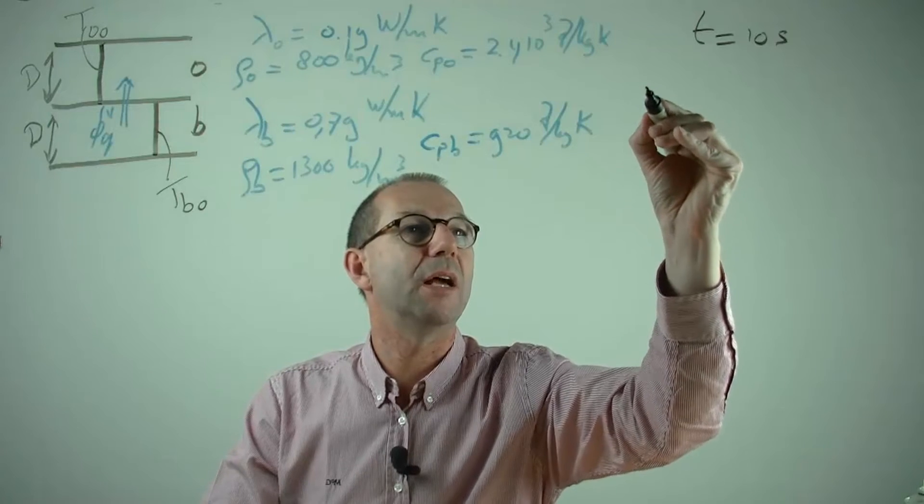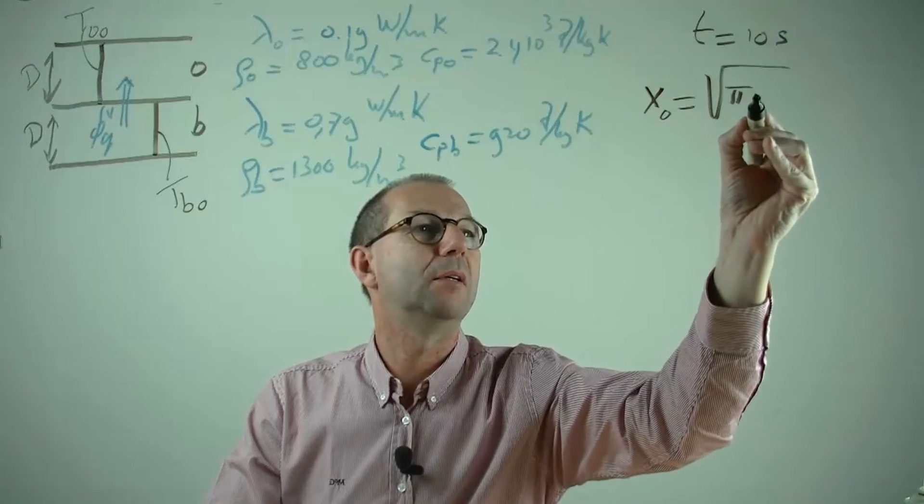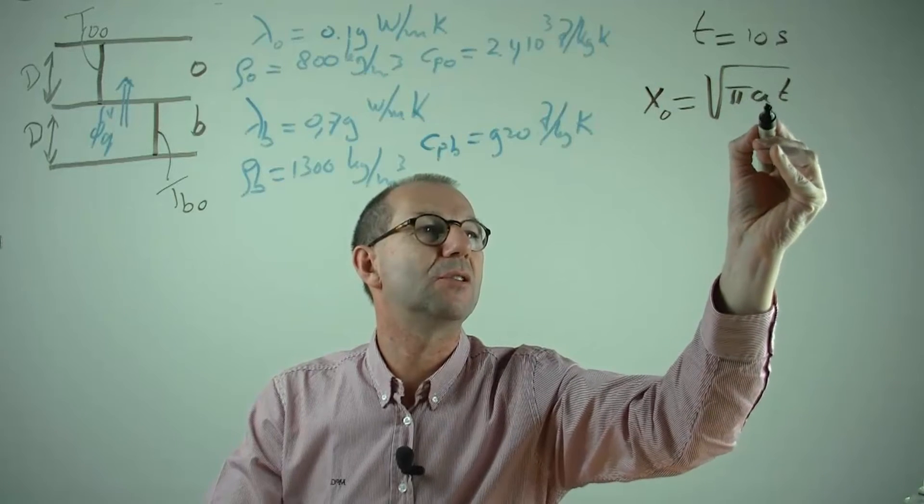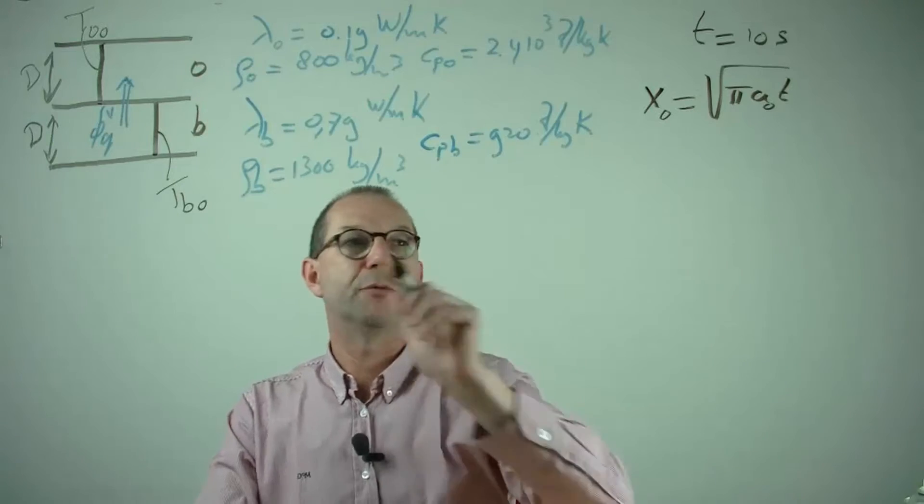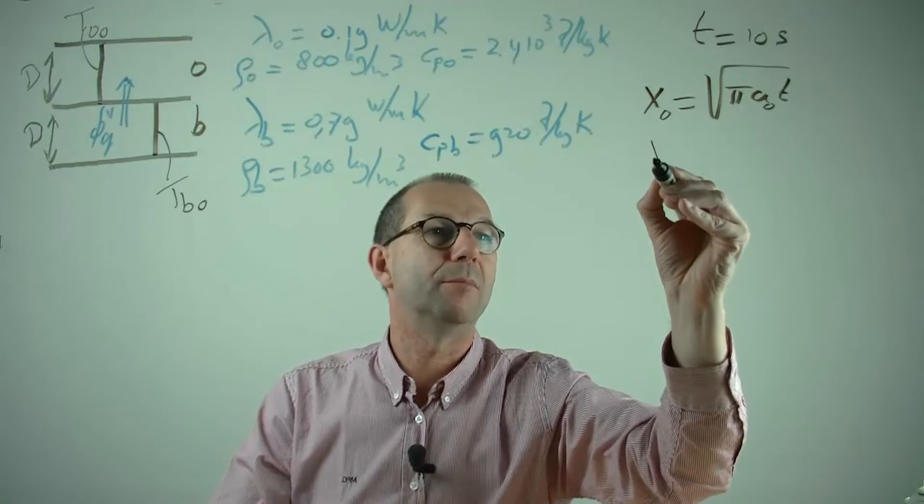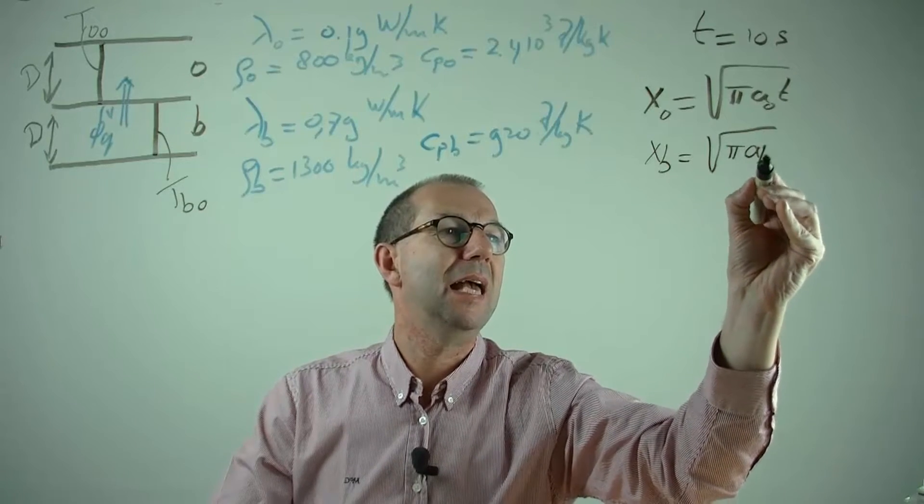And the penetration depth, as we know, is pi a squared out of this. And I need to give that a subscript o, because there's one for oak, and there will be one for the bituminous material as well, as they don't have the same a.